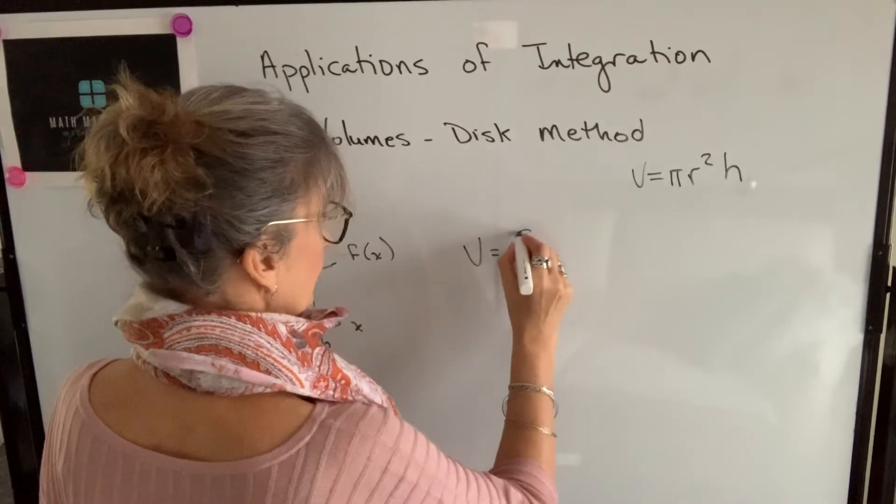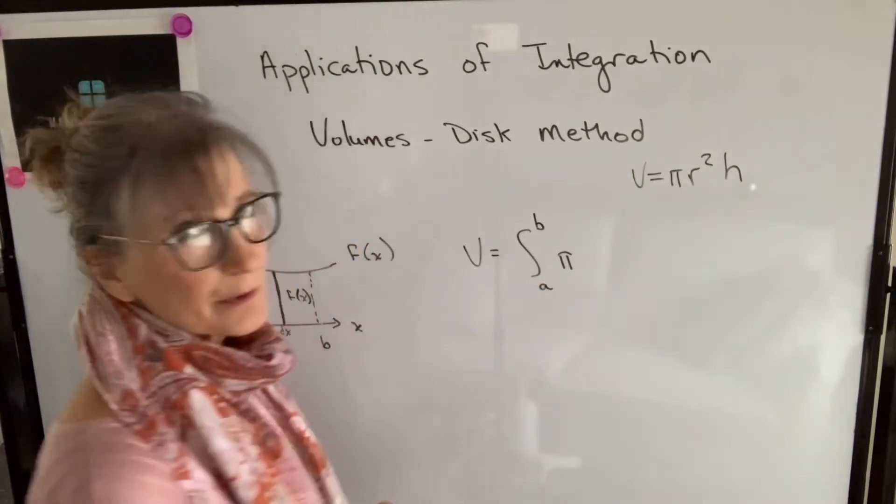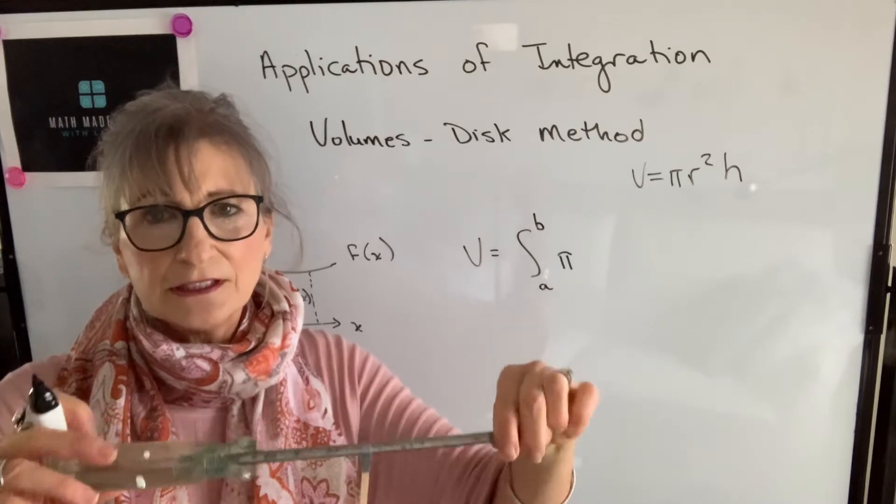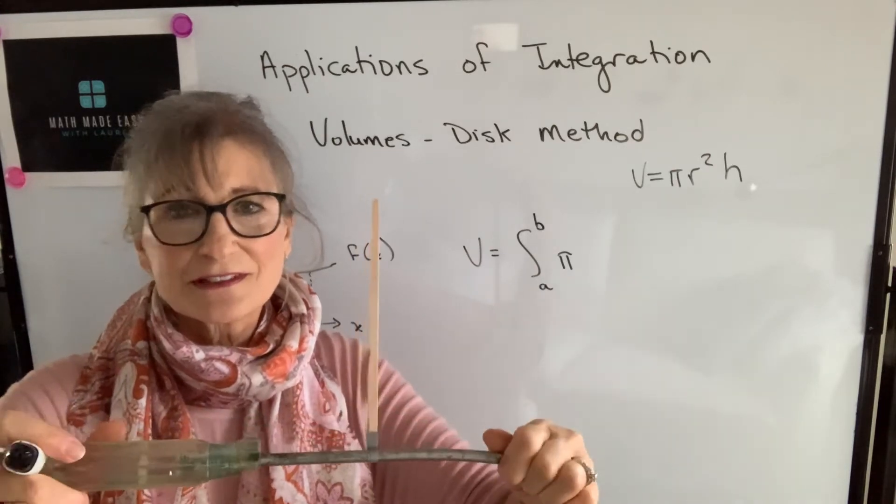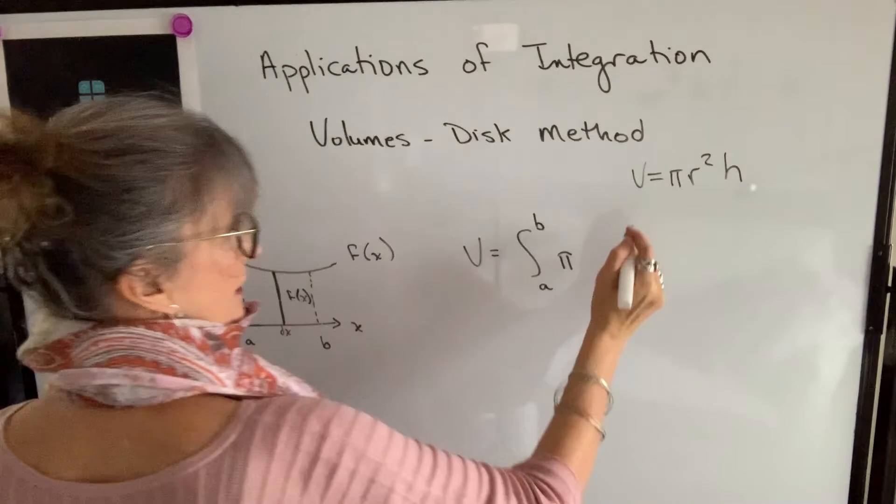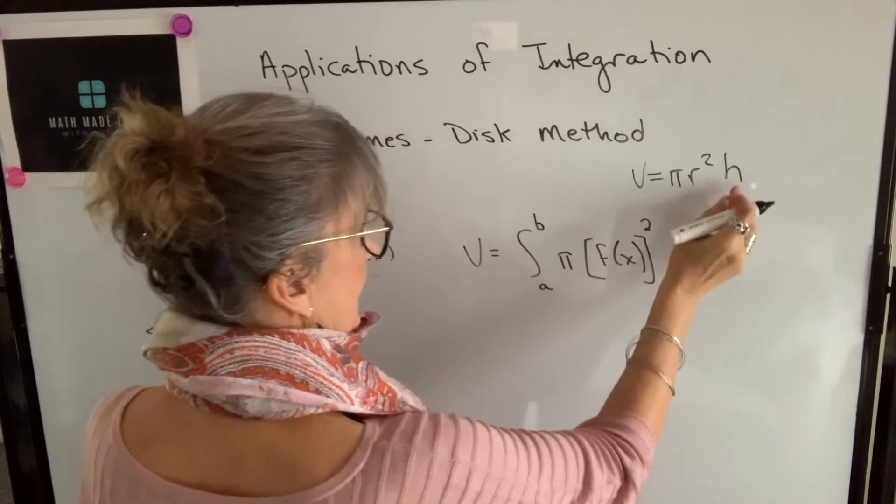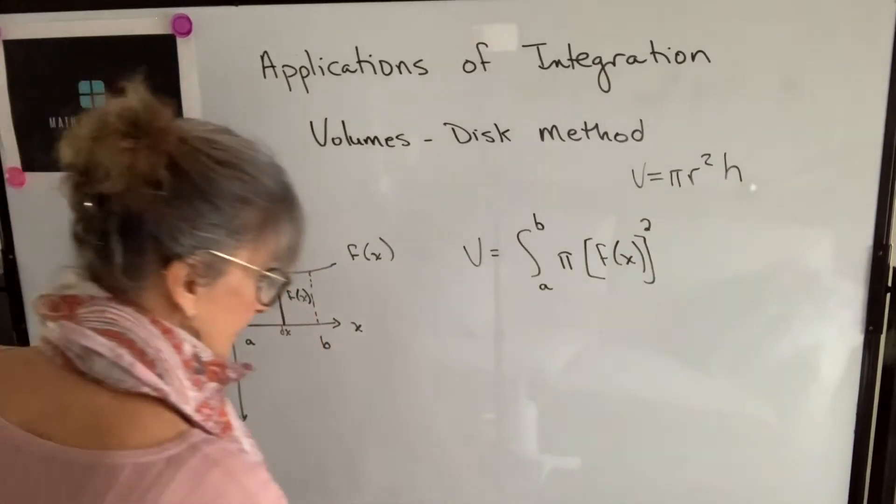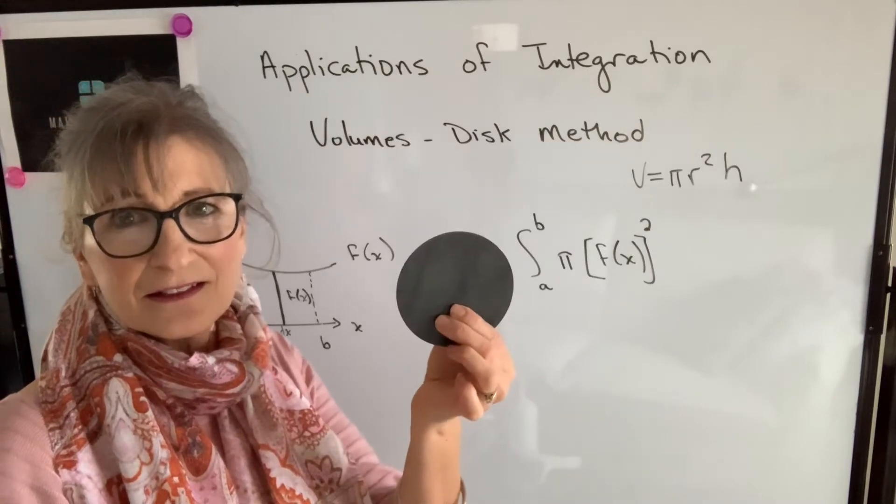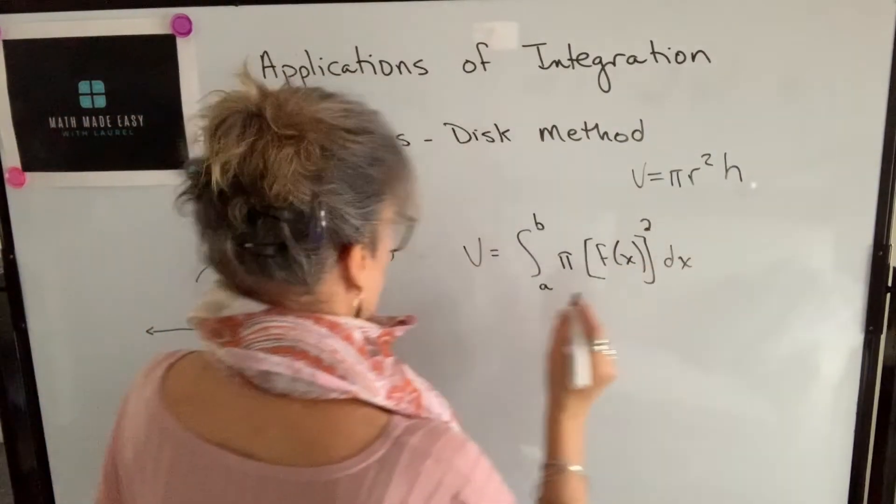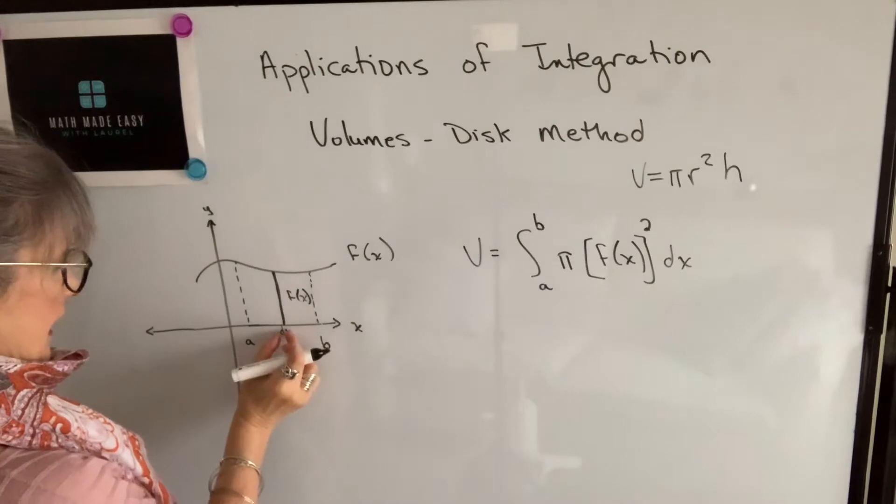It will be the integral from A to B of pi times the radius squared. In terms of our rectangle, the radius is f of x. It will be the radius of the disc that's formed. So my radius will be f of x, and we're going to square it. The height of that disc will be the dx. It will be the thickness of that disc. So this is the radius when we rotate that rectangle around the x-axis, and dx will be the height.